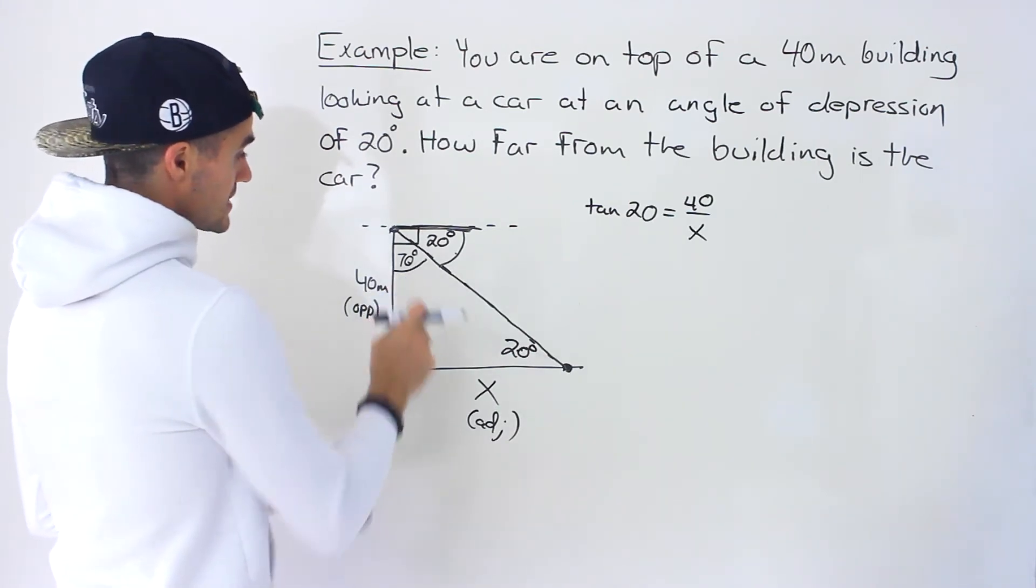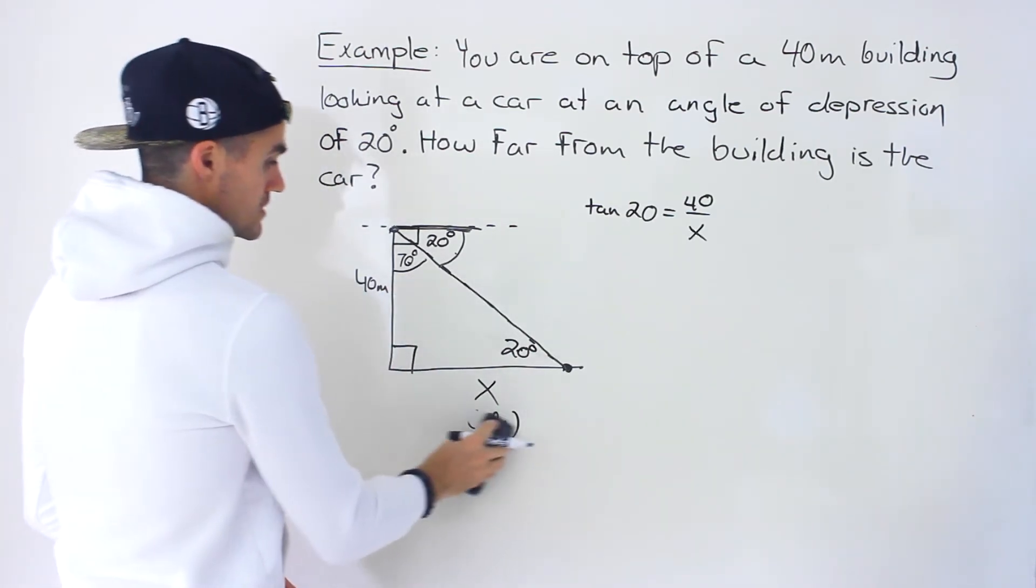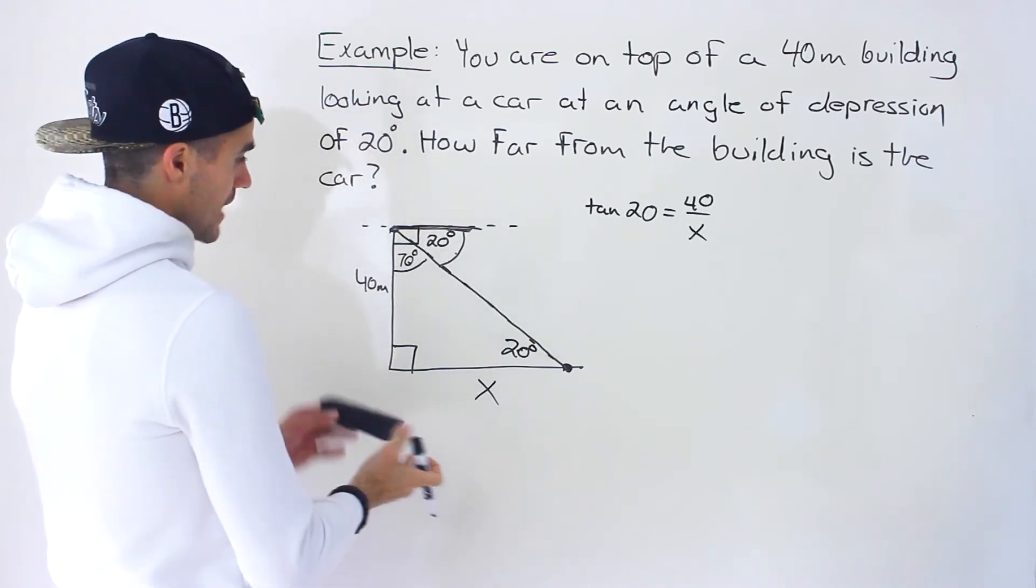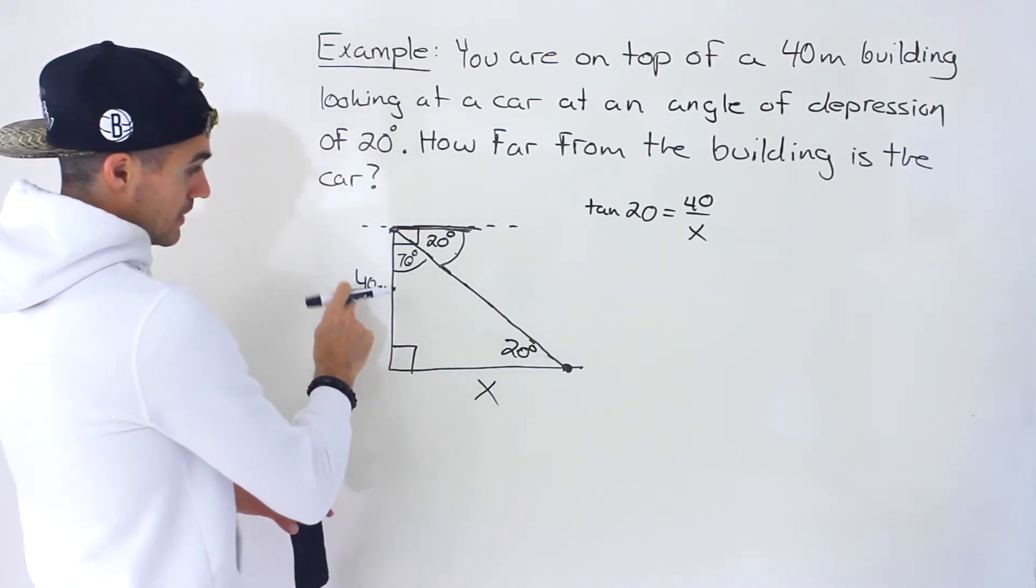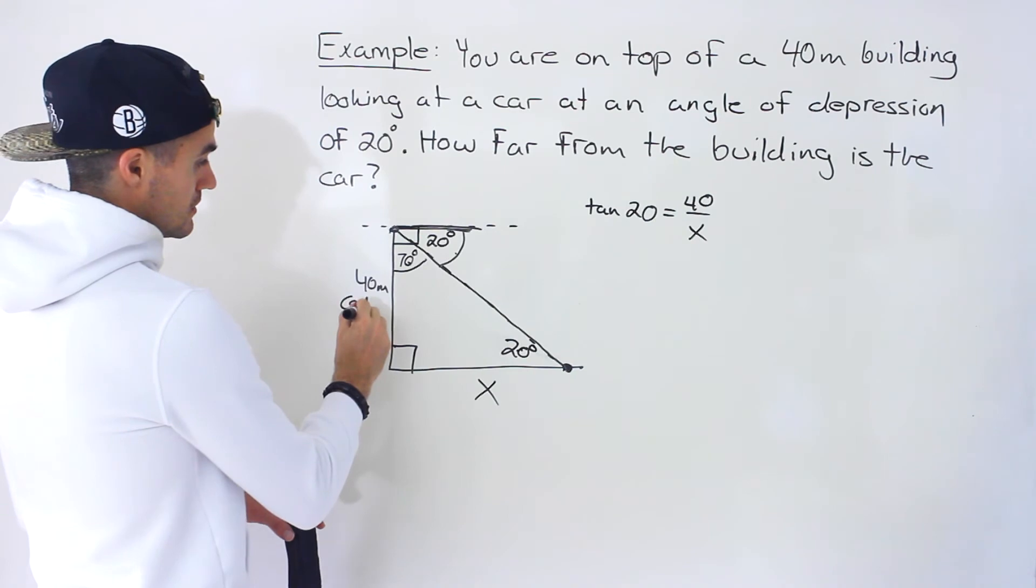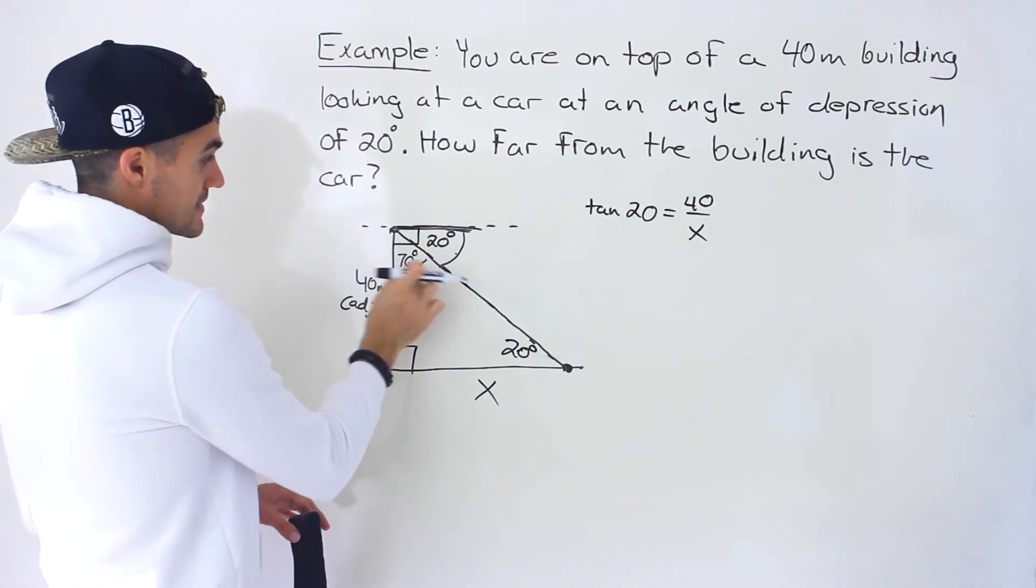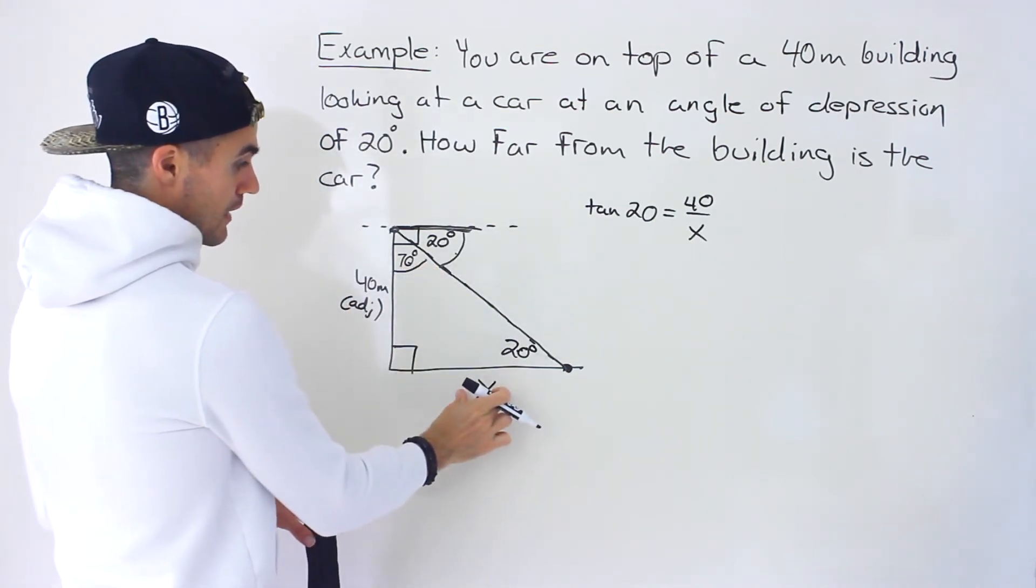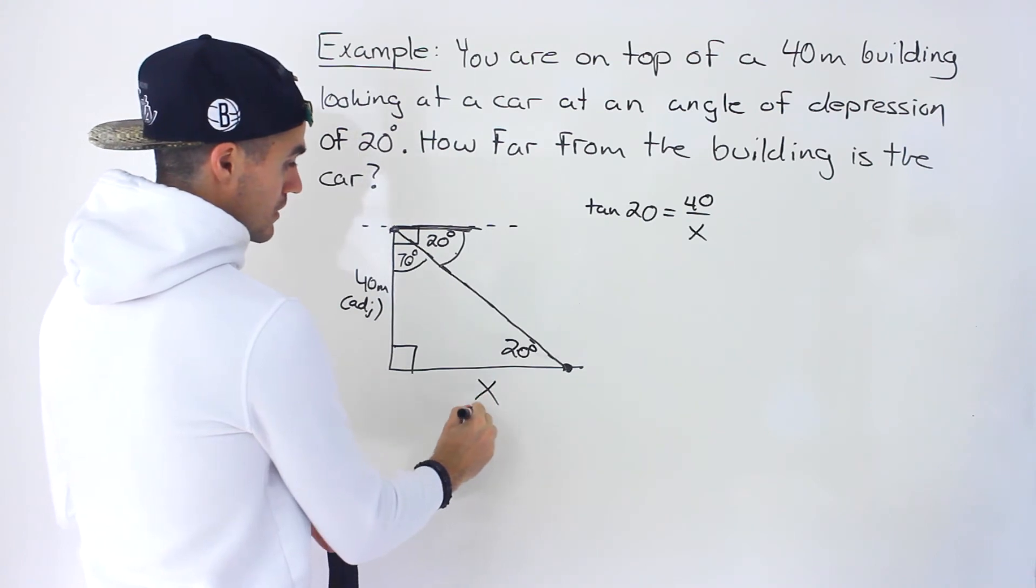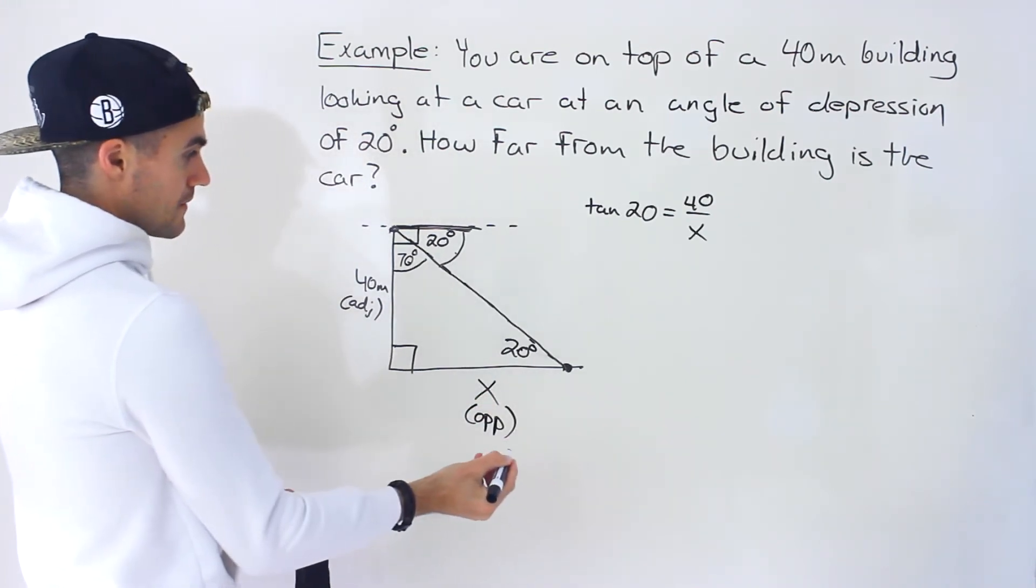Now, if you use this angle 70 degrees as the reference, well, then notice that the 40 meters then would be the adjacent side, the angle that's or the side that's attached to the angle. And then this side here would be the opposite side like that.